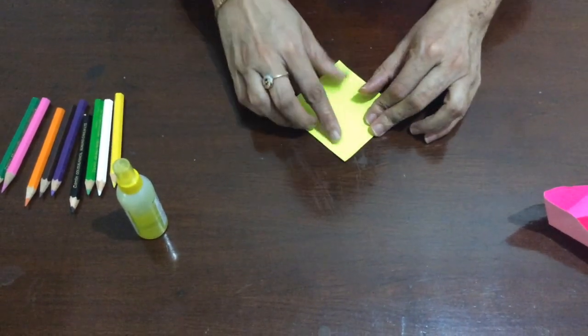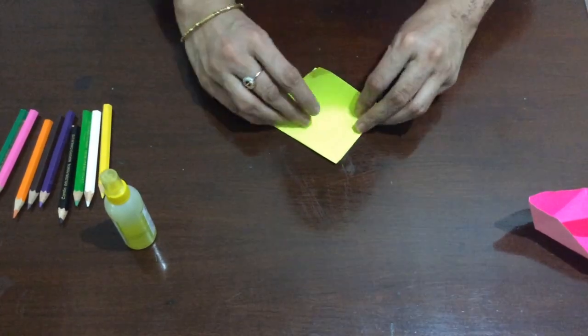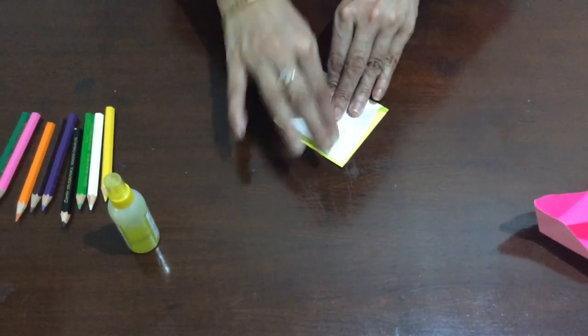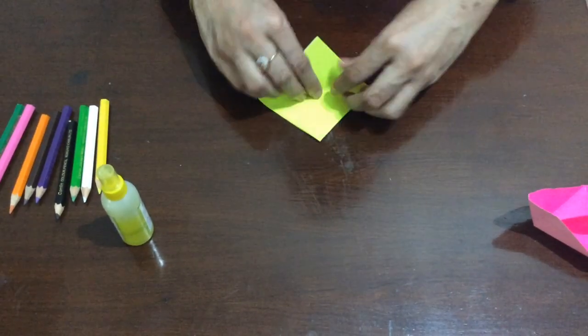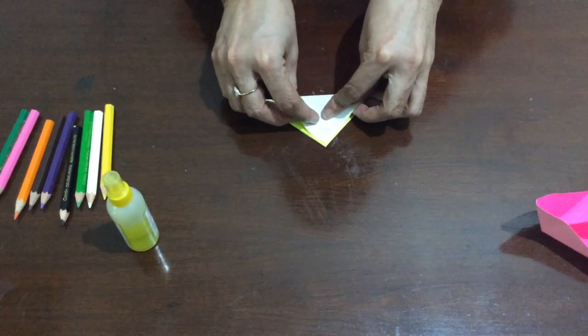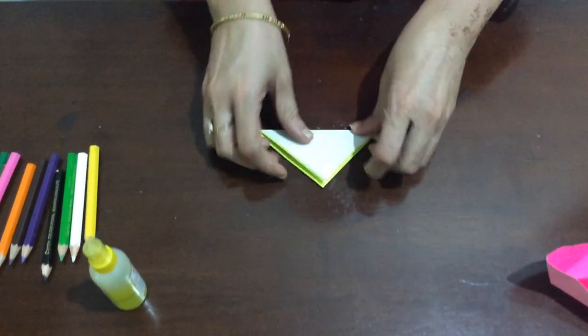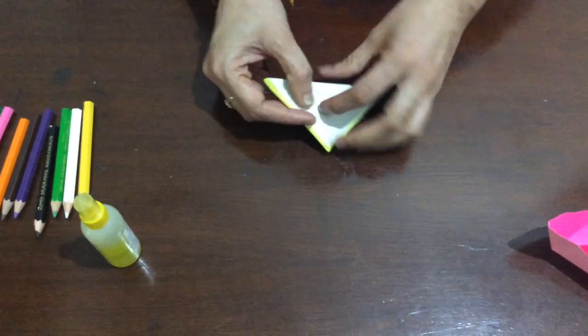Now ask the child to keep the open side towards himself and try to fold just one leaf of the paper upside like this. And rest all the other sides like this so that you get a triangle. All the creases should be pressed properly so that the folding is neat.